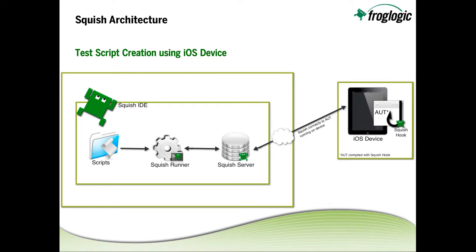Test script creation using an iOS device instead of the iOS simulator is very similar. The Squish IDE generates scripts using the Squish runner and the Squish server. However, the Squish server resides with the IDE, connecting via a network connection to the AUT already running on the device. The AUT must be compiled using the Squish hook, allowing steps to be recorded as they are performed and reported back to the Squish IDE.